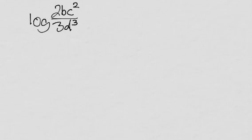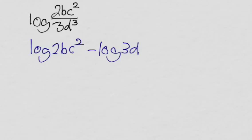If we just start from the top, we know that we can separate this division with subtraction outside of the log. So that'll be log 2bc squared minus log of 3d cubed.